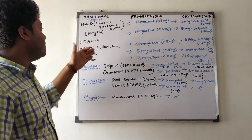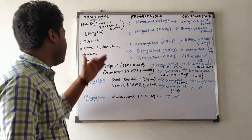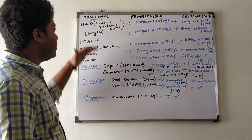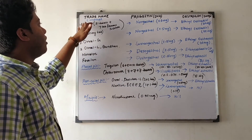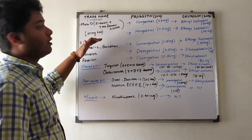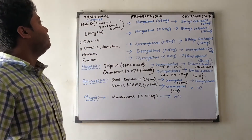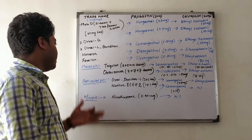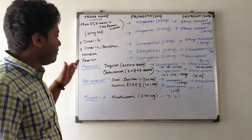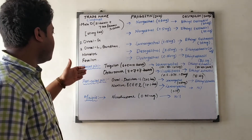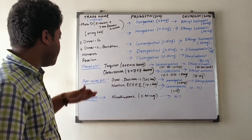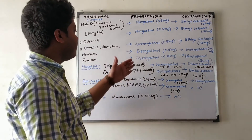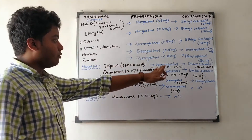Other brands such as Ovral-G, Ovral-Wave, Norvalon, and Loette all fall under combined pills. Looking at the successive different phases of pills — combined pills, phasic preparations, and mini pills — we see that progesterone concentration is progressively going down, being given in microgram concentrations.